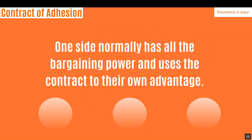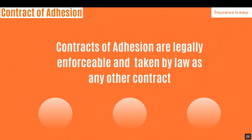In contracts of adhesion, one side normally has all the bargaining power and uses the contract to their own advantage. Contracts of adhesion are legally enforceable and are treated by law as any other type of contract.